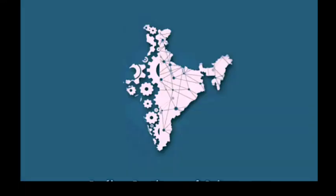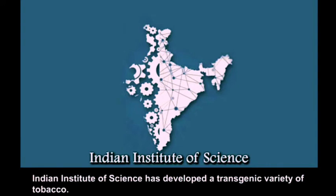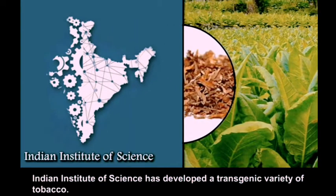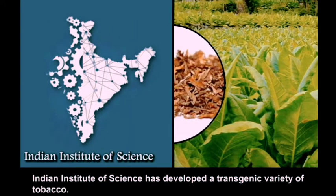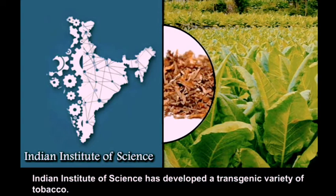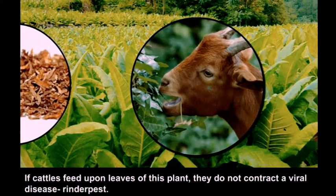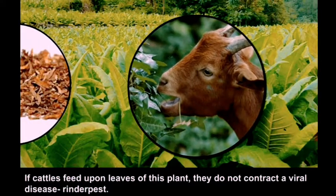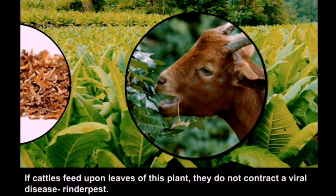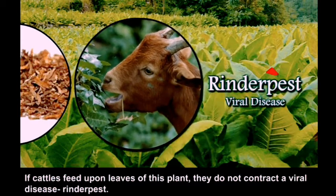Do you know? The Indian Institute of Science has developed a transgenic variety of tobacco. If cattle feed upon the leaves of this plant, they do not contract a viral disease.